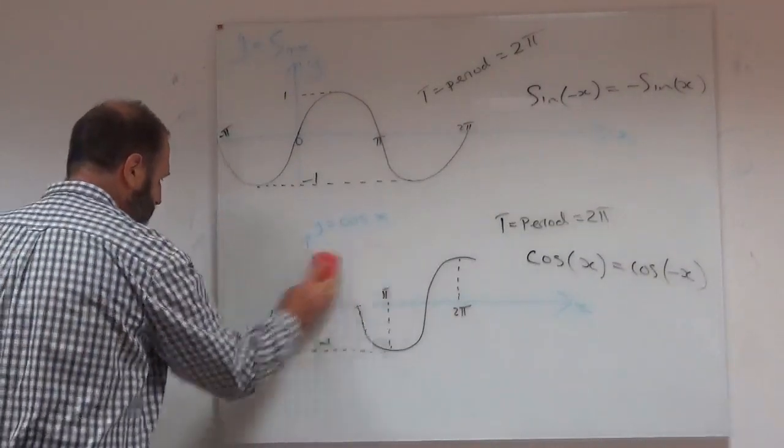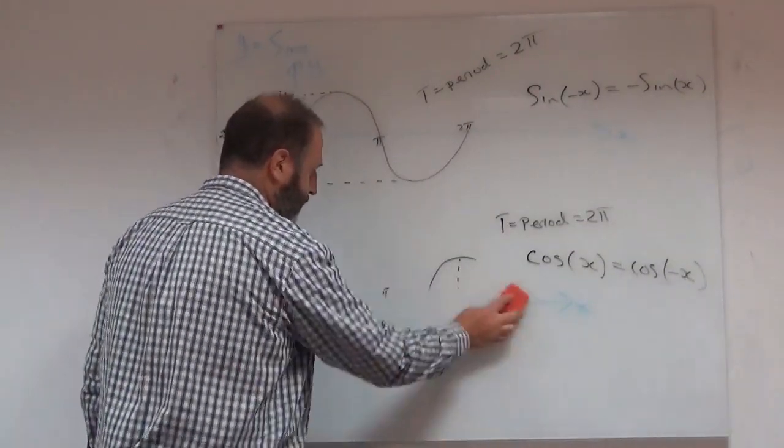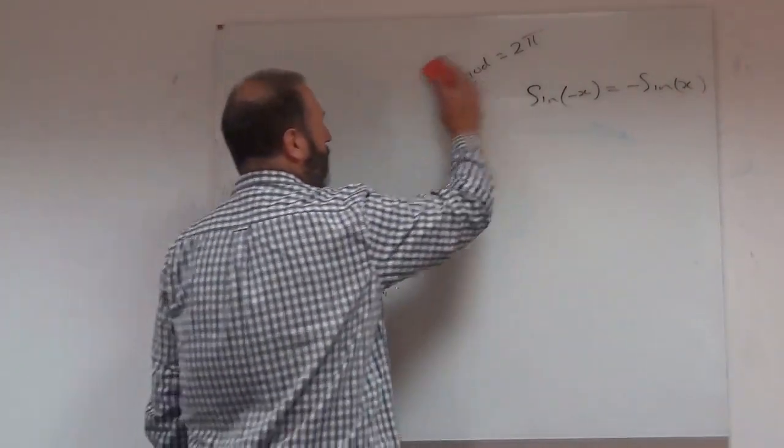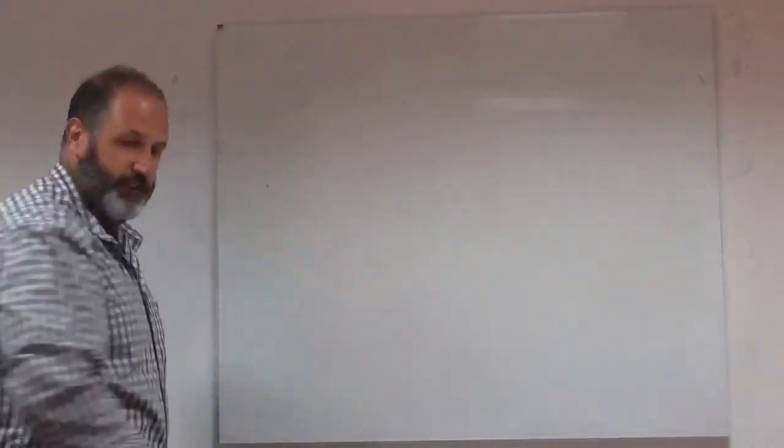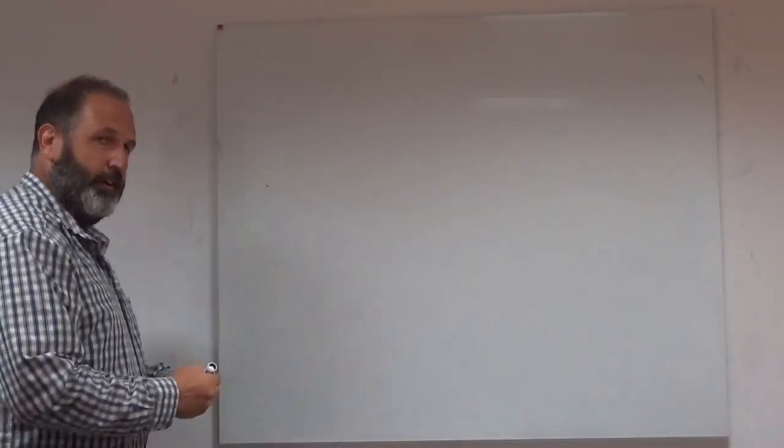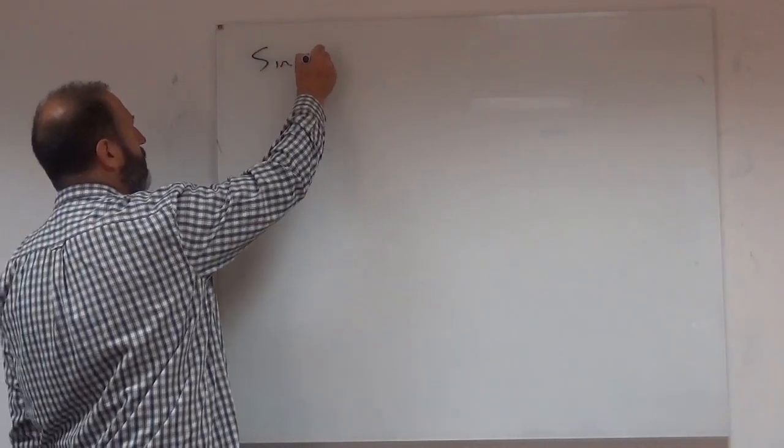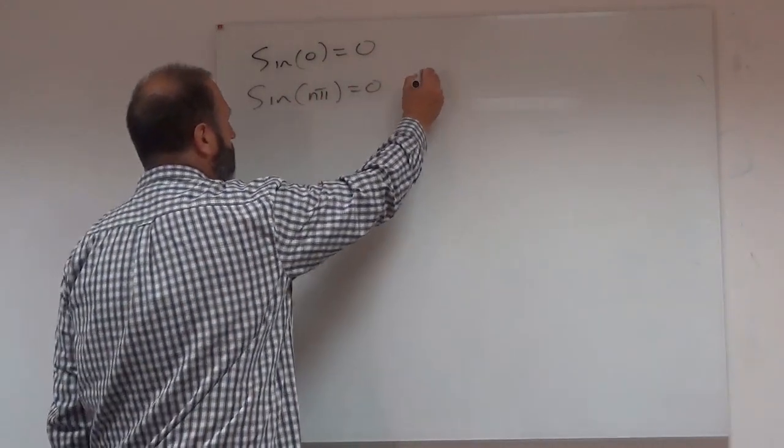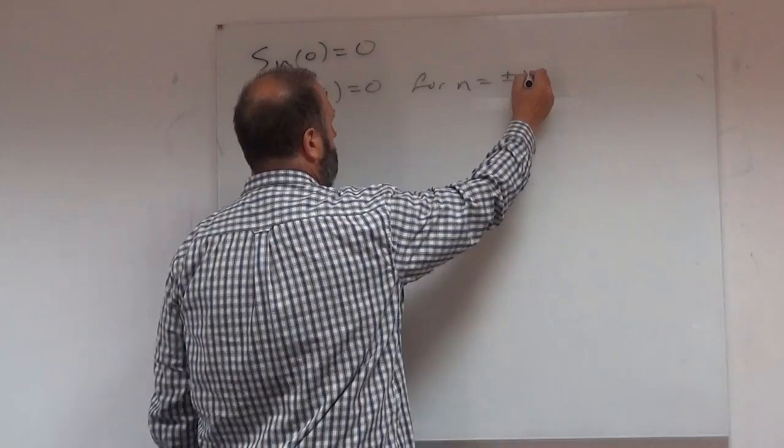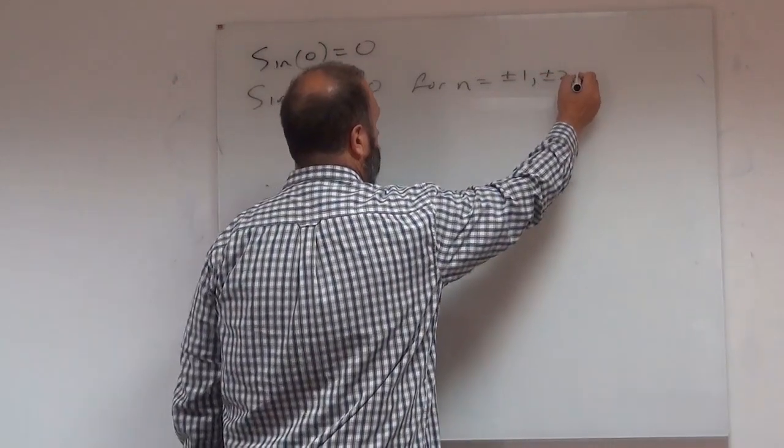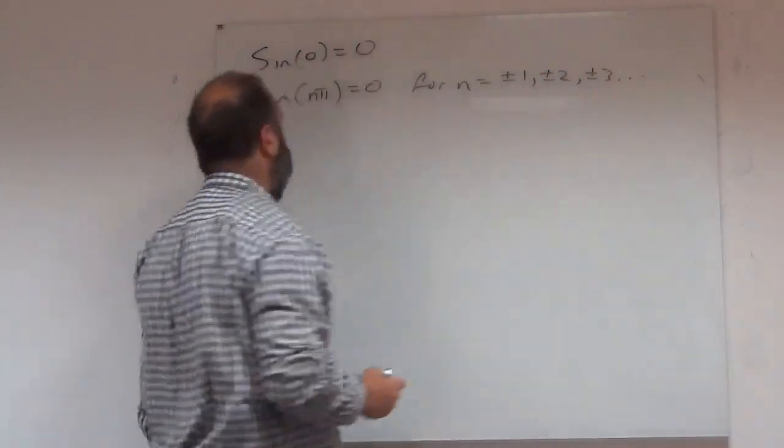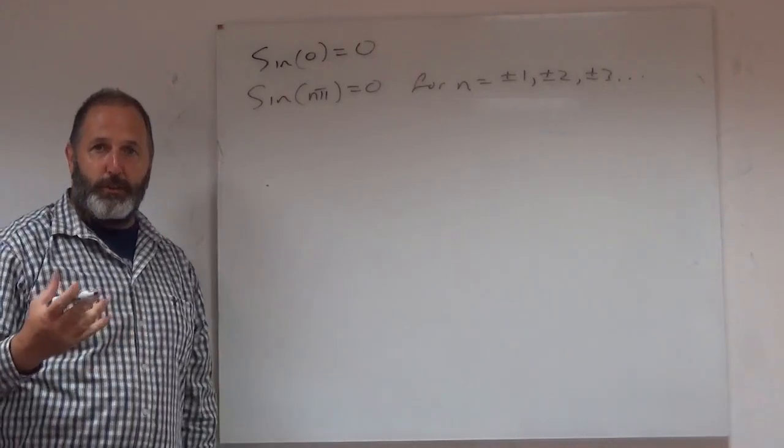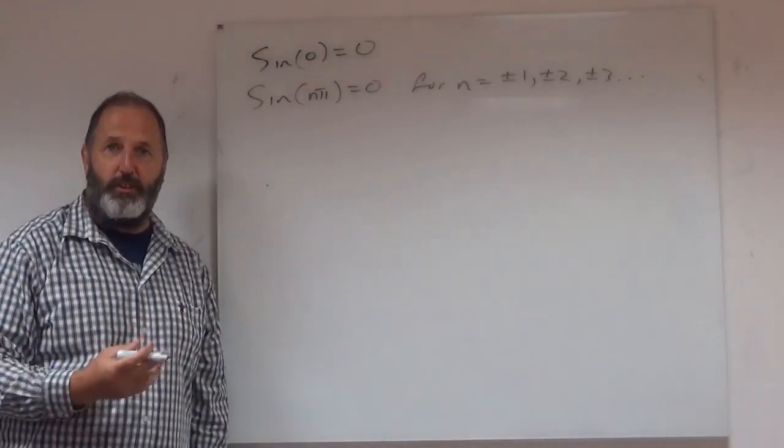So what can we do with this information? How useful is it going to be for you looking at the Fourier series? Sine of 0 is 0. Sine of nπ is 0 for all n, where n is plus or minus 1, plus or minus 2, etc. You have to know those things.